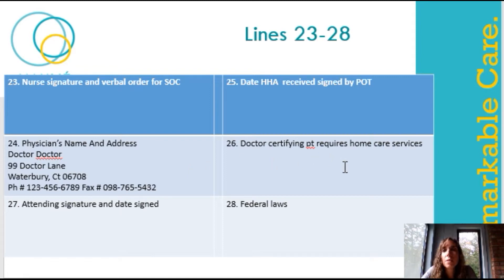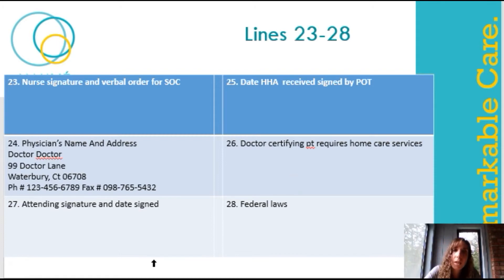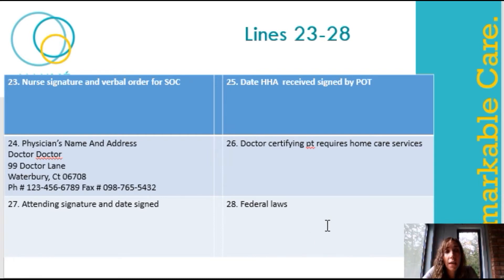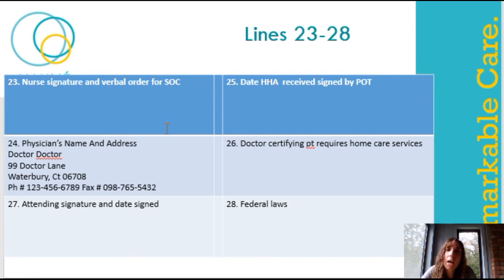Number 26 is certifying that the patient requires home care — very important. And then at the very bottom will be the attending signature and date signed. Number 28 talks about federal laws that we must follow. Now, these lines 23 through 28 do change — for some reason, on the next few pages, the numbers are not 23 through 28. I believe they're 9 through something.